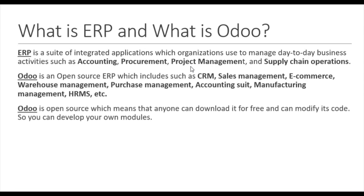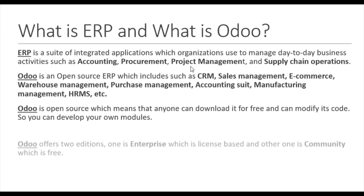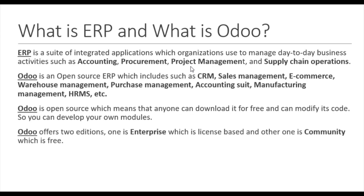Odoo is open source, which means anyone can download it for free and can modify the code, and you can develop your own custom module to extend the functionality and add more features. Odoo offers two editions: one is the Enterprise edition, which is license-based and you have to pay a fee yearly per user and per application; the other is the Community edition, which is totally free and anyone can download and use it for their business.